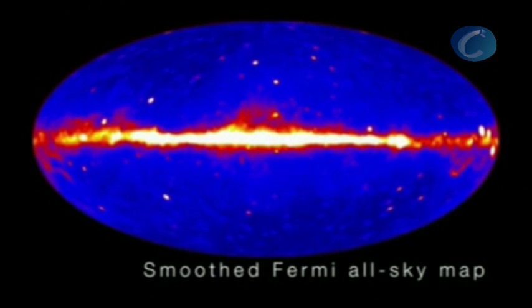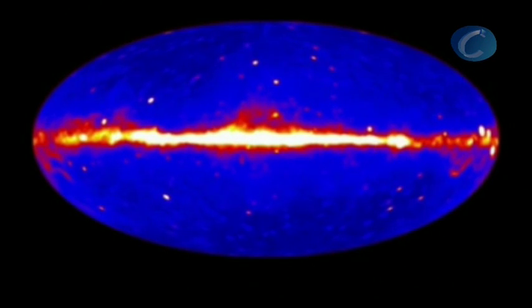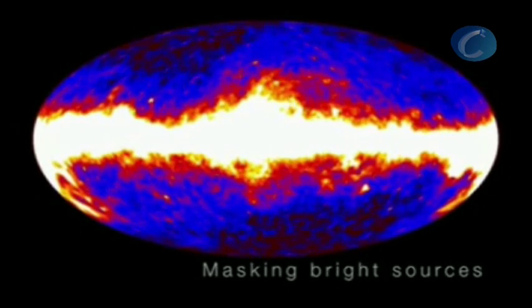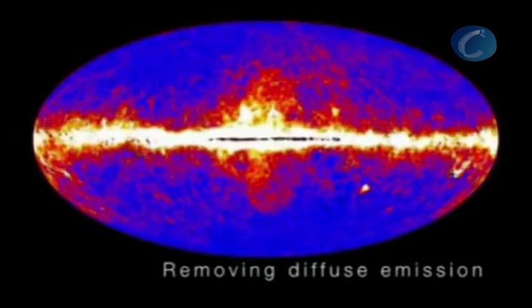These enormous gamma ray-emitting lobes aren't immediately visible in the Fermi all-sky map. However, by processing the data, a group of scientists was able to bring these unexpected structures into sharp relief.